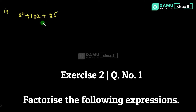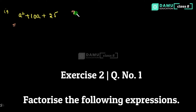We will start our first question: a squared plus 10a plus 25. We have to write this in the format of x into y — the product of two factors.